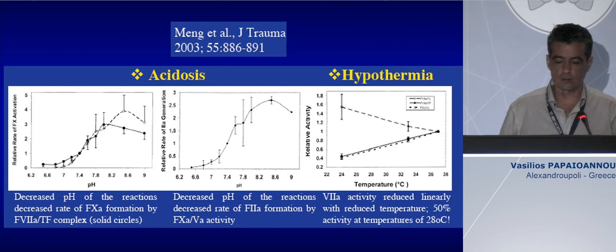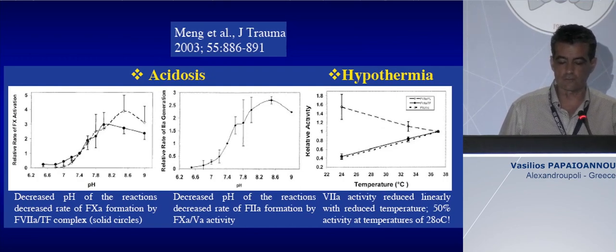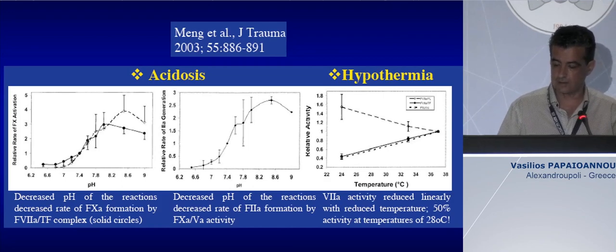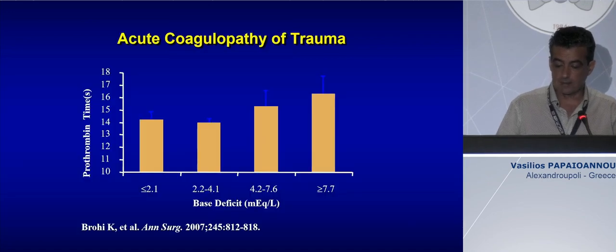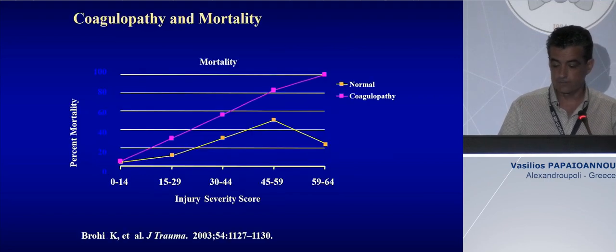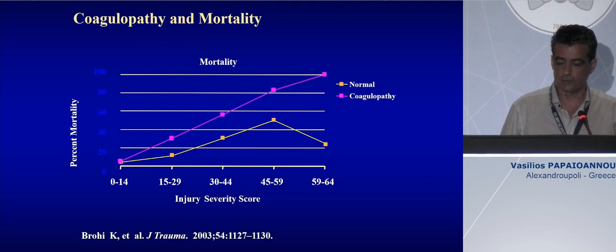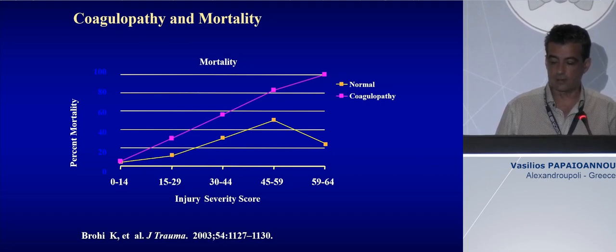Many studies have shown that the lower the pH, the lower the activity of different coagulation factors such as factor X or factor II, whereas low temperature can decrease even 50% of the activity of coagulation factors such as factor II. There is a linear association between increased base deficit, particularly in the first 24 hours, and prolongation of clotting time. Classic studies showed that the higher the injury severity score — more than 30 or even 40 — the higher the incidence of coagulopathy.